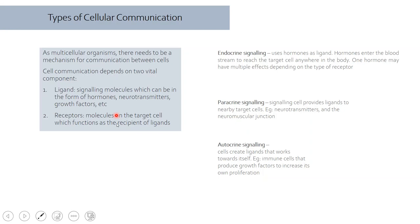Depending on how far a signal travels, cellular communication can be divided into endocrine, paracrine, or autocrine signaling. In endocrine signaling, hormones enter the bloodstream and travel far — for example, thyroid hormones secreted by the thyroid gland reaching distant cells. Paracrine signaling involves one cell communicating with a neighboring cell, as in neurotransmission between closely adjacent neurons. Autocrine signaling occurs when a cell secretes ligands that act back on itself, which is very common in immune cells.